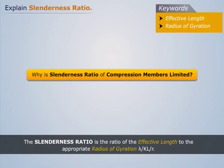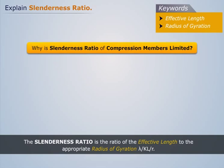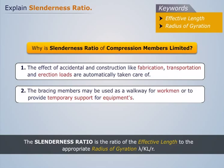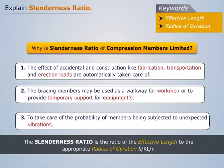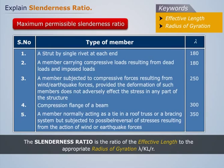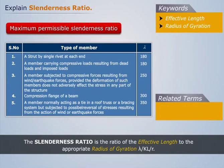The slenderness ratio of compression members is limited for several reasons: the effects of accidental and construction loads such as fabrication, transportation, and erection are automatically taken care of; bracing members may be used as a walkway for workmen or to provide temporary support for equipment; and to account for the probability of members being subjected to unexpected vibrations, a maximum permissible slenderness ratio is specified.